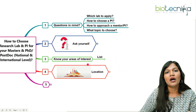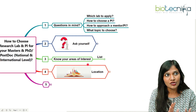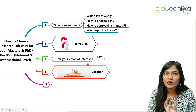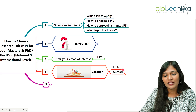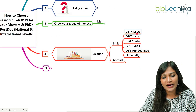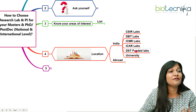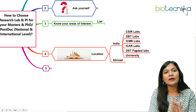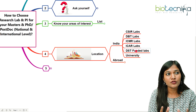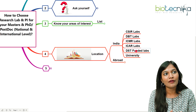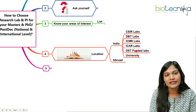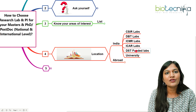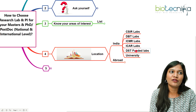Once you have your research interest, the next question is: where do I do the research — India or abroad? If you choose India, you can look at CSIR labs, DBT labs, ICMR, ICAR, DST-funded labs, or universities. Some labs take candidates without a fellowship, but most require you to have cleared CSIR, ICMR, DBT, or GATE exams. If you haven't cleared those exams, you can enter as a project assistant and then convert to a JRF-PhD registration. That is also possible.